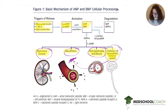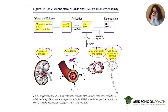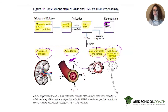These natriuretic peptides — ANP, which is secreted by the atria, and BNP, which is secreted by the ventricles — are degraded by neprilysin. Neprilysin degrades ANP and BNP into their inactive components.